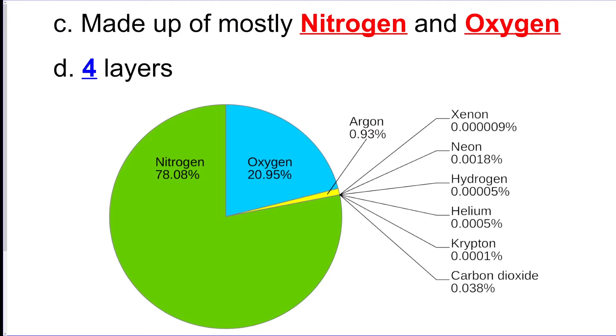It's mostly made of nitrogen and oxygen. Those are the main gases that we breathe in as we take a breath. So everyone mainly thinks it's mostly oxygen, but it's actually mostly nitrogen. And like we said before, there are four layers.